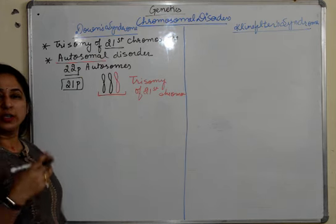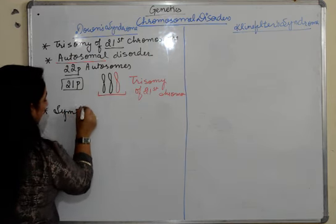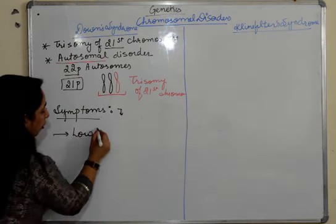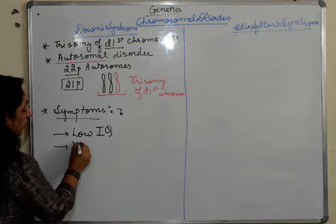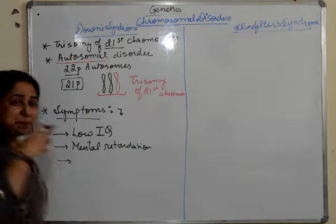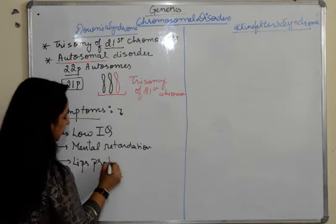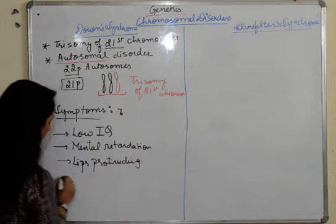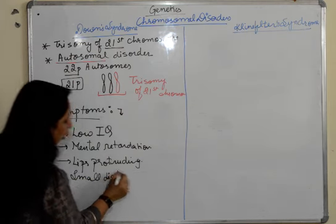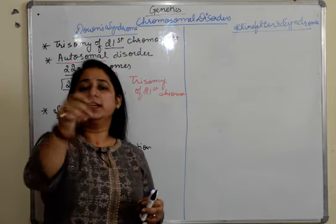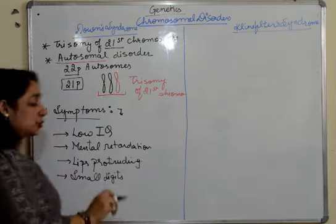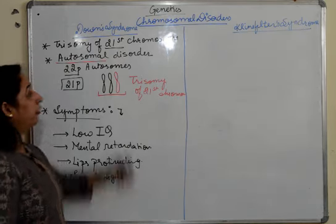Now, the symptoms which we can observe for Down syndrome: first, very low IQ — the intelligence quotient is very very low. Second, mental retardation. Third, lips protruding out. And also they have very small digits. When I say digits, I am talking about all the fingers and the thumb — they are comparatively small. These are the symptoms which appear for Down syndrome.